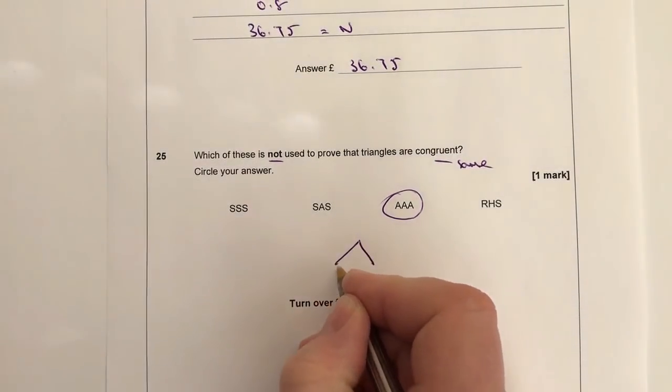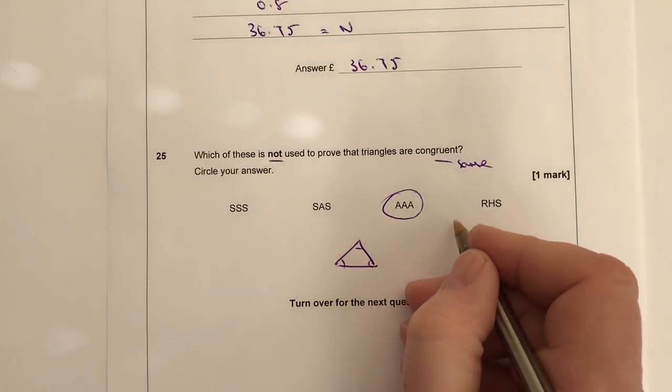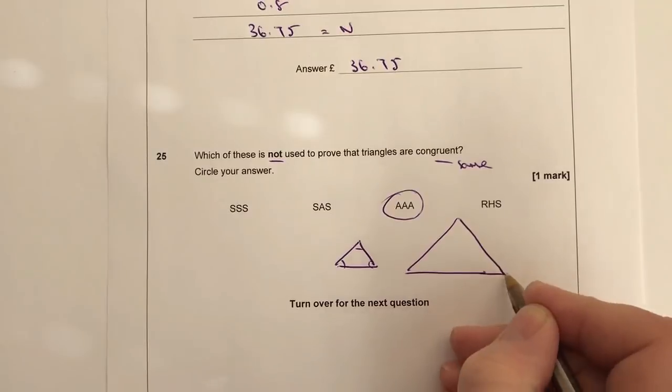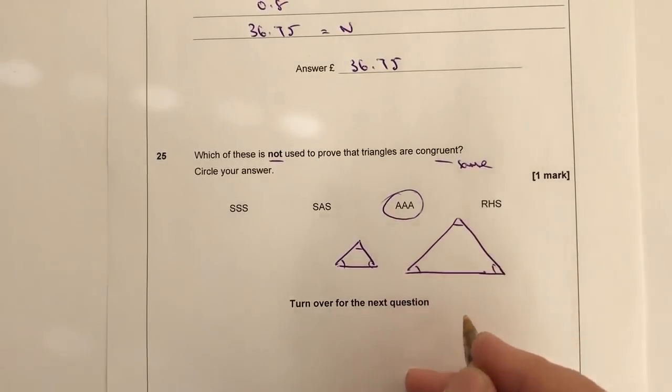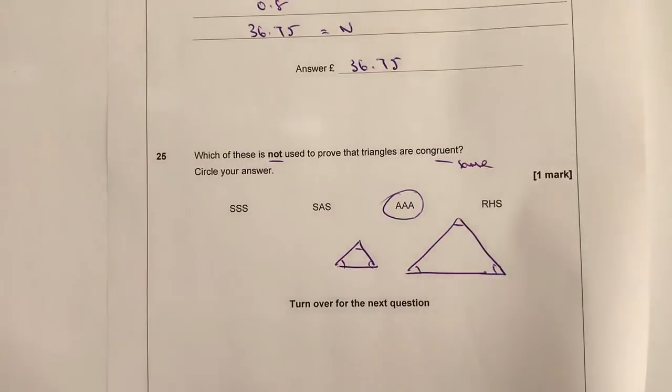Well, the angles could be exactly the same, but the triangle could be bigger. So it's not proving that the triangles are the same; it's just proving that they've got the same angles. Hope that's all right for you. Let's move on then to question number 26.